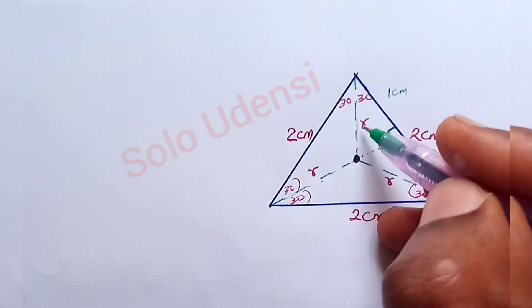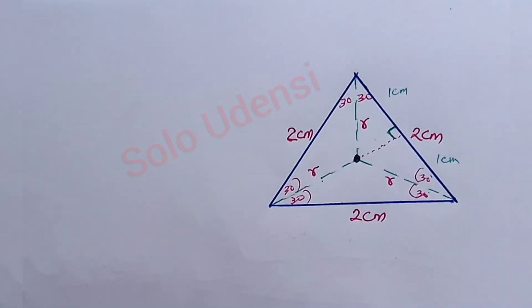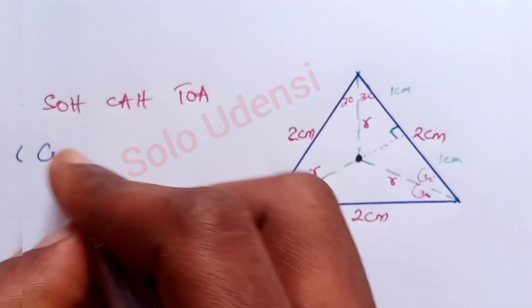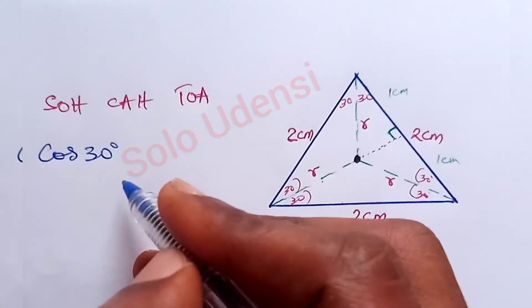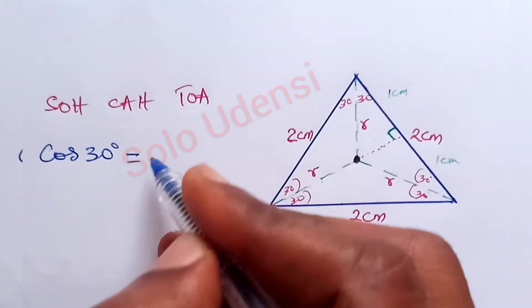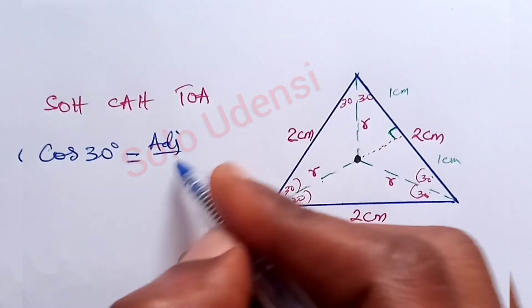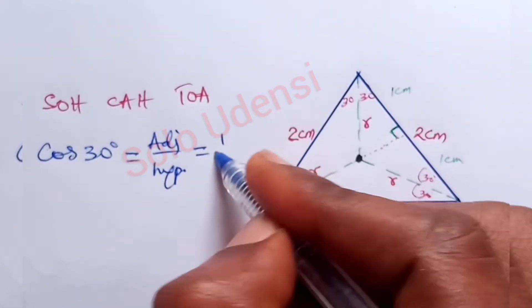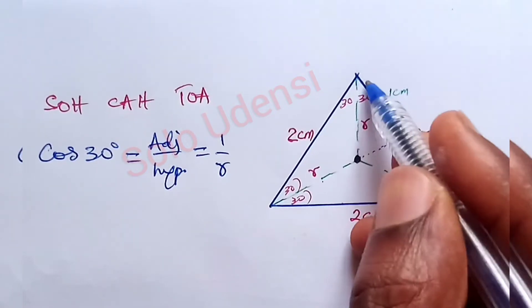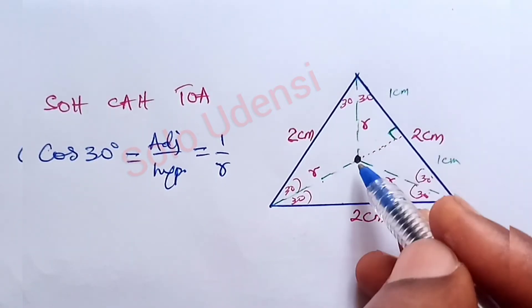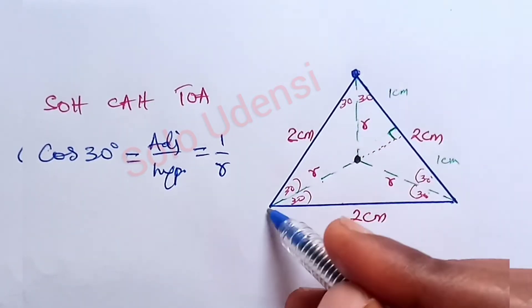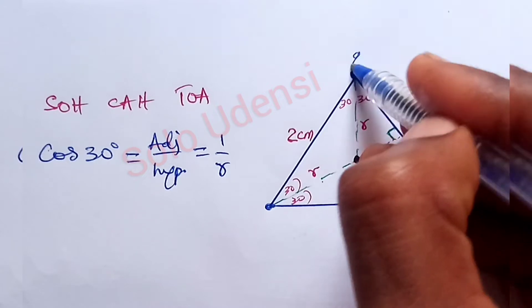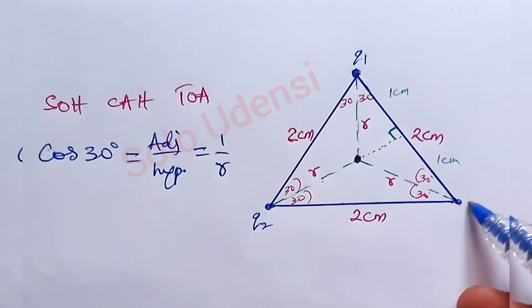We want to find the value of R — the distance from a vertex to the center — and use it to solve the problem. Using trigonometry on the small right triangle, we say cos 30 degrees equals adjacent over hypotenuse, which is 1 over R. There is a charge at each vertex — Q1, Q2, and Q3.